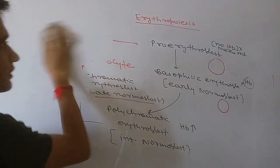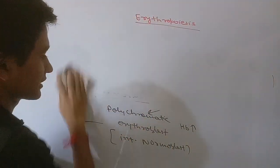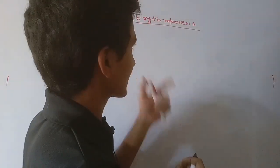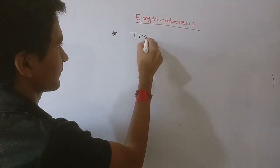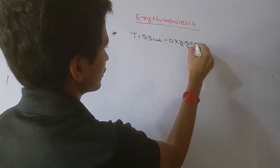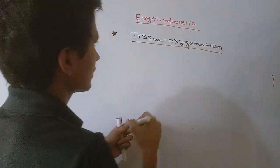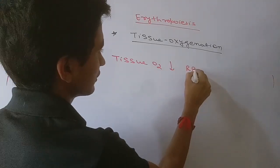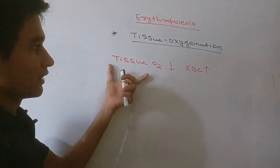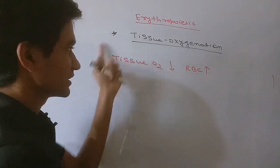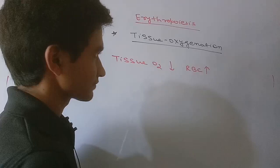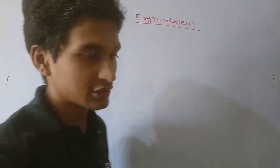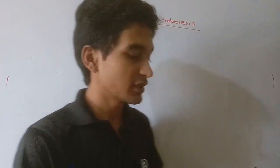Now coming to the factors affecting erythropoiesis. The most important factor, according to Guyton's book, is tissue oxygenation. If tissue oxygenation decreases, the number of RBC will increase to overcome this deficiency. Tissue oxygenation is the key stimulus that regulates RBC number.